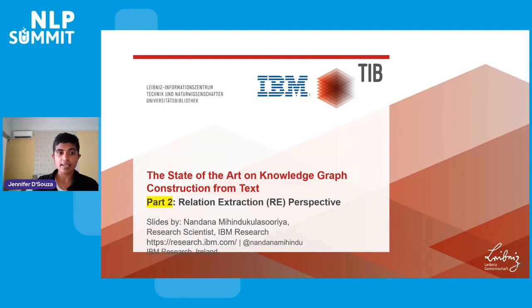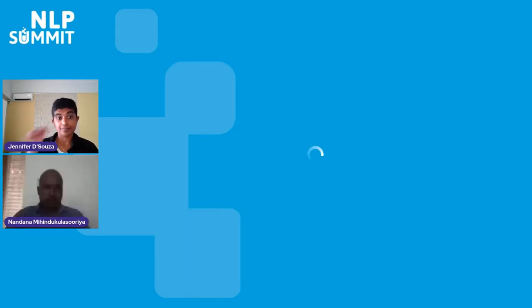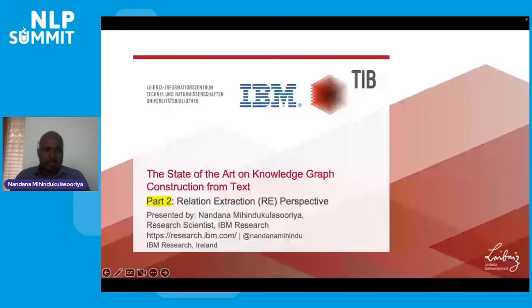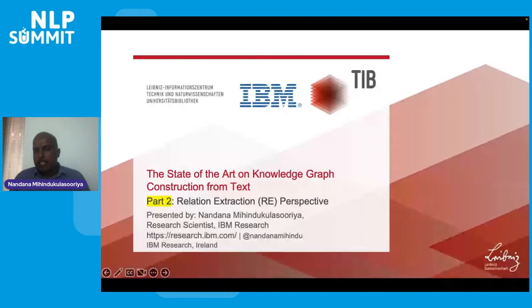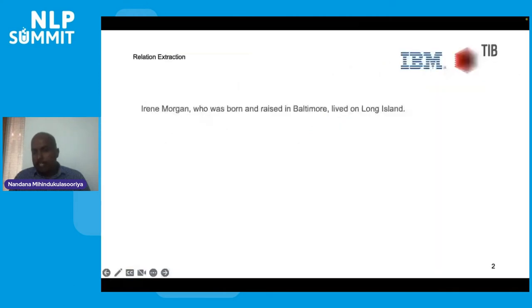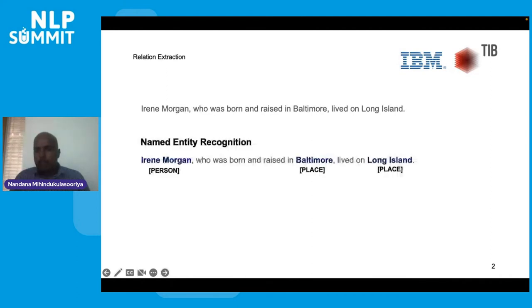Now I will transfer to my colleague Nandana for the second part of the talk. Thank you, Jennifer. Jennifer talked about named entity extraction. In the second part, I will talk about relation extraction. Given a sentence like 'Irene Morgan, who was born and raised in Baltimore and lived in Long Island,' named entity recognition identifies the entities and their types. An interesting follow-on task is to identify relations between these entities mentioned in the text — for example, aligning 'Irene Morgan was born in Baltimore' to the predefined relation city-of-birth.